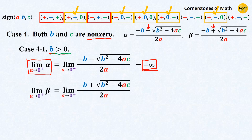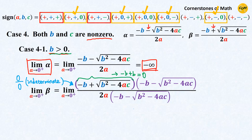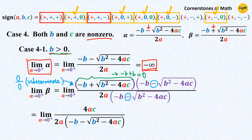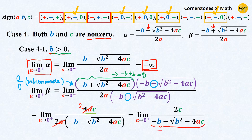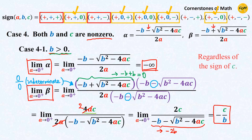Next, the limit of beta: as a approaches 0, the numerator approaches minus b plus b, which is 0. So now we have a 0 over 0 indeterminate limit. Therefore, we multiply the expression by the opposite sign on both numerator and denominator — that is, minus b minus square root of b squared minus 4ac. The numerator simplifies to 4ac, so we can cancel out 2a. As you can see, the denominator approaches minus 2b, so the limit of beta is minus c over b. Notice that these results hold regardless of the sign of c.